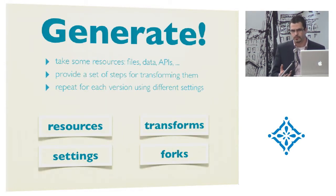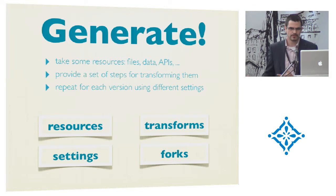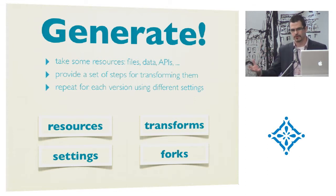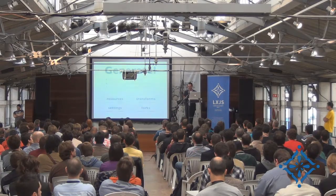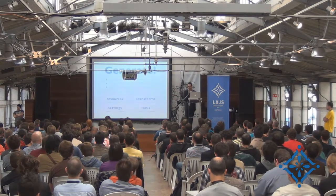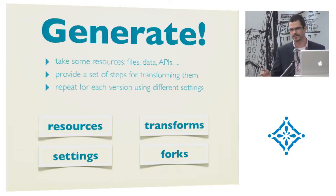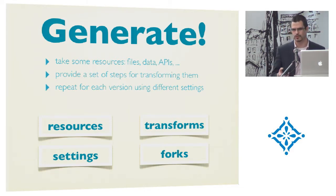Essentially, when you generate apps using this approach, you take some resources — HTML files, Objective-C files, images, whatever — apply some transformations to them, and produce a version of your app for each target. You have to be able to control how that happens. You need resources you want to change, transforms that you do to the resources, a set of settings and configurations, and this idea of forking the different versions. The tool we've developed allows you to get this under control and do it very easily.